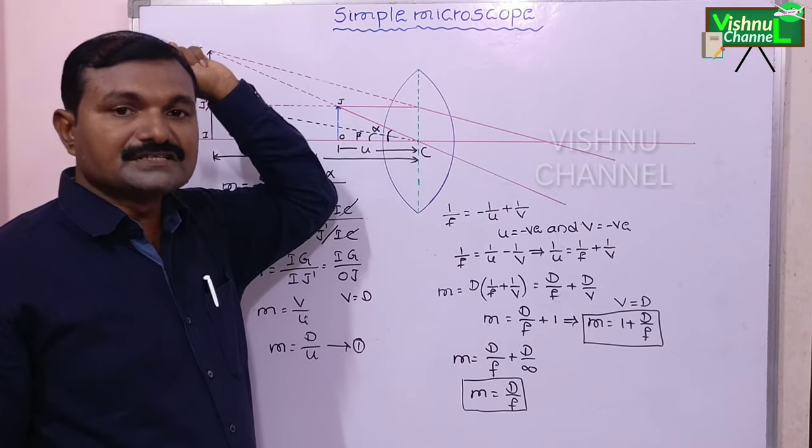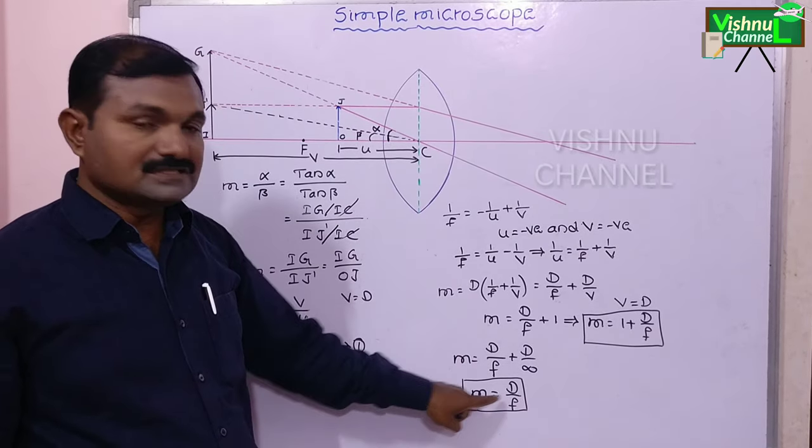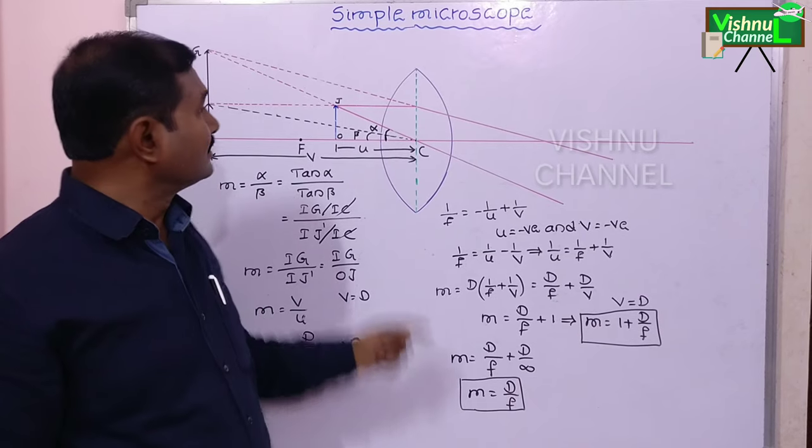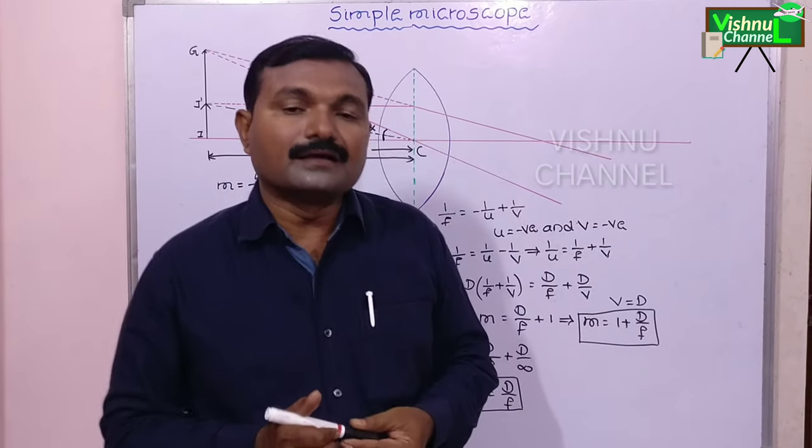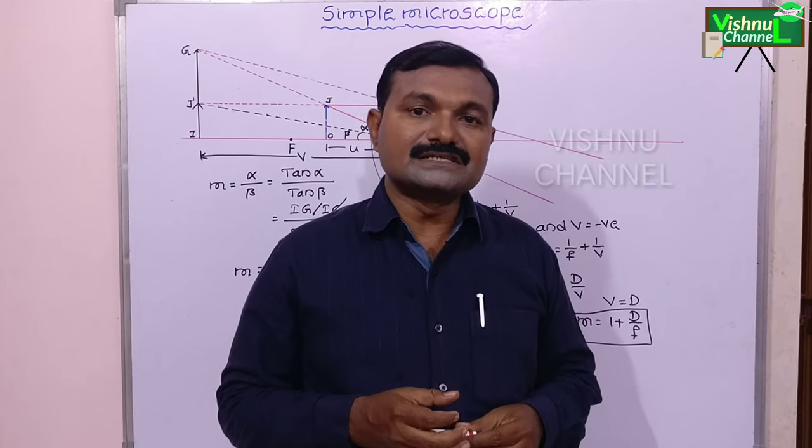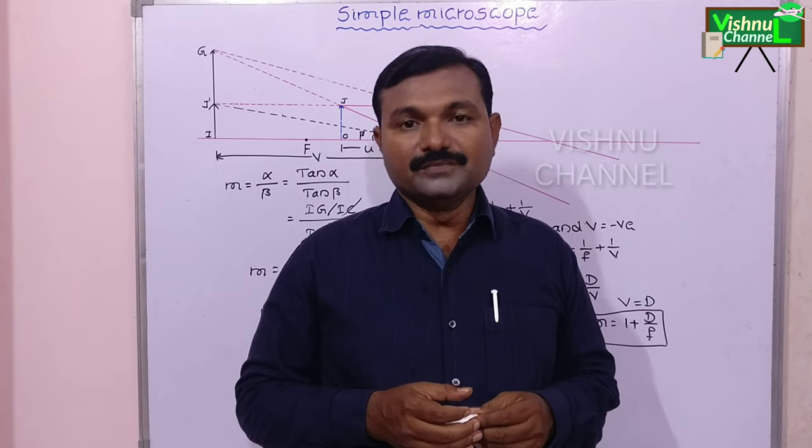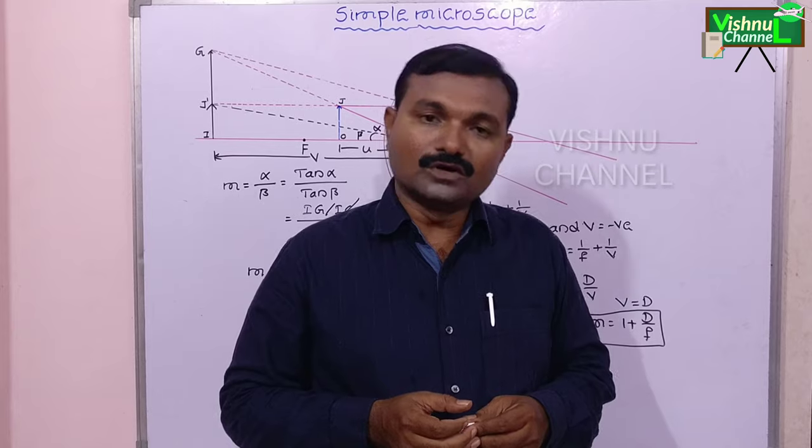If the image is formed at least distance of distinct vision, magnifying power is maximum. If the image is formed at infinite distance, magnifying power is minimum. This is a simple microscope. If you have any doubts in the comments section please clarify. Thank you.